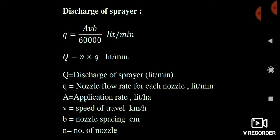Small n is the number of nozzles, and large Q is the total discharge of the sprayer. Small q is the discharge of one nozzle. To calculate the total discharge of the sprayer, multiply small q by the number of nozzles n, so large Q = small q × n. If you are comfortable with unit dimensions, you can easily derive and solve questions on this.